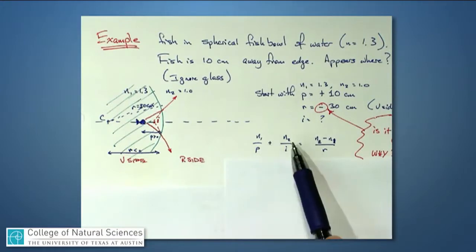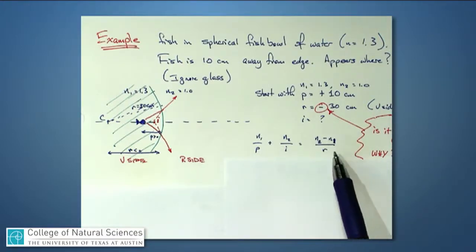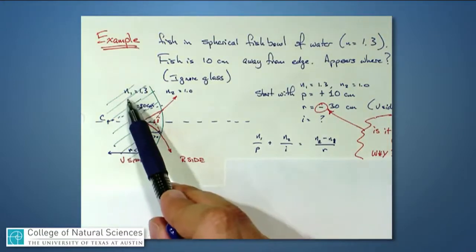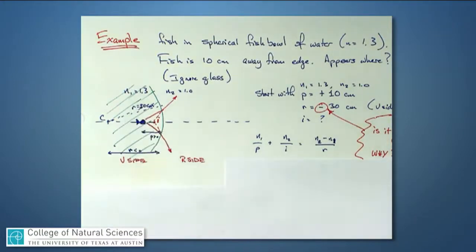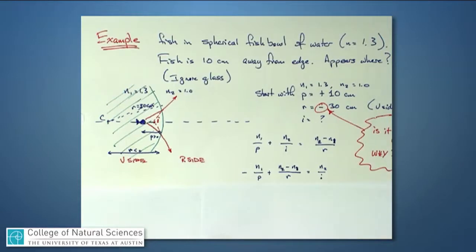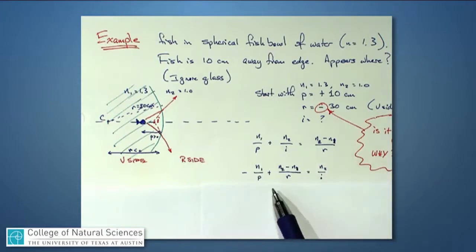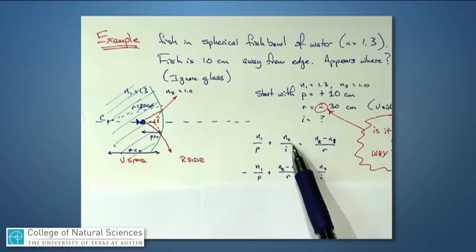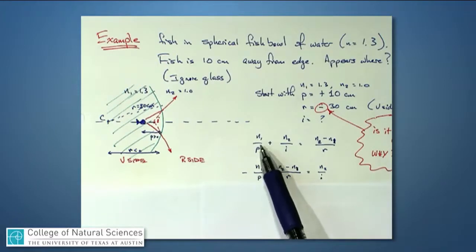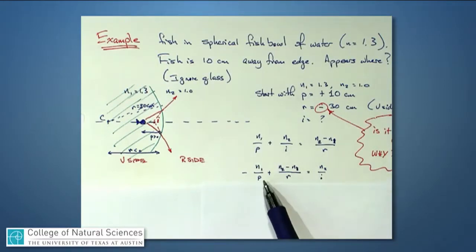We use the expression n1/p + n2/I = (n2 − n1)/R. We need to remember that n1, where the light is coming from, has index 1.3, and n2 for air is approximately 1. I would like to know the image location — that's the unknown. I know n1, p, n2, and R; the only unknown is the image distance I. So I take the n1/p term, subtract it from both sides, leaving n2/I by itself.